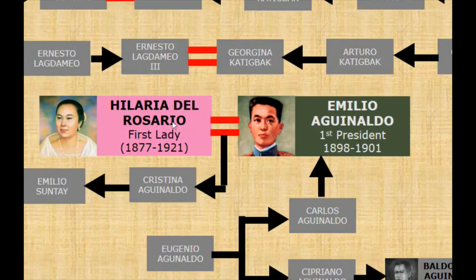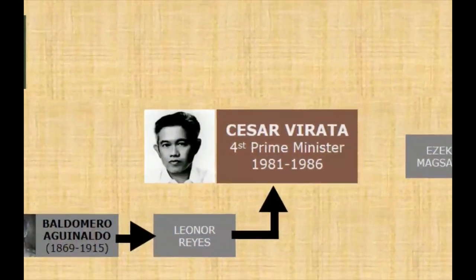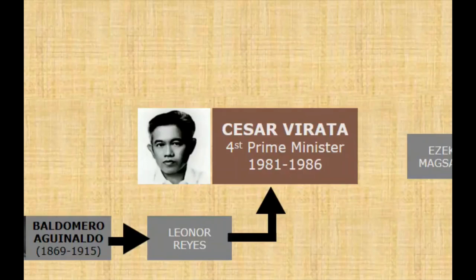If we go down in his family tree, we can see that Emilio Aguinaldo and Cesar Virata are related. Cesar Virata served as prime minister from 1981 to 1986 under President Ferdinand Marcos. He is Emilio Aguinaldo's first cousin, three generations removed.